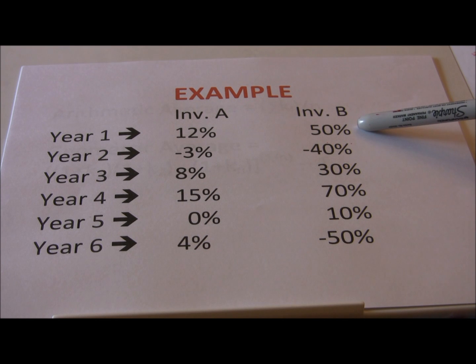Investment B was a much more volatile investment. Higher returns when things were good, lower returns when things were bad. So we had a fifty percent return in year one followed by a negative forty percent return, thirty percent, seventy percent, ten percent, and in year six we lose fifty percent.